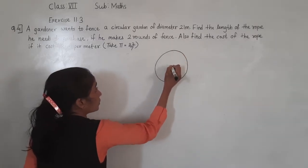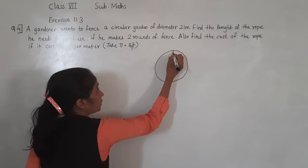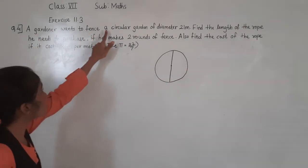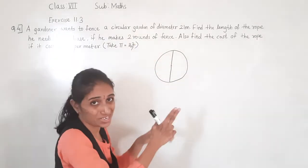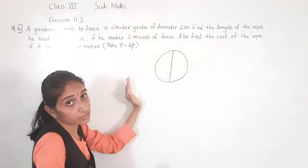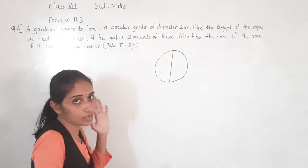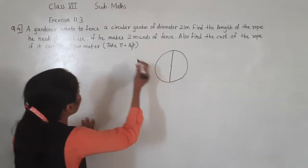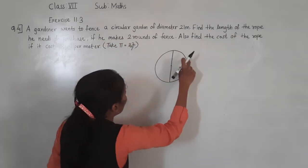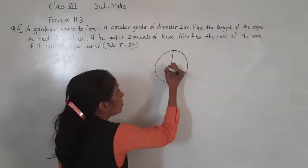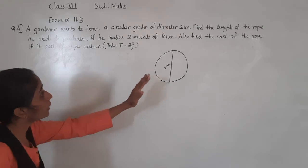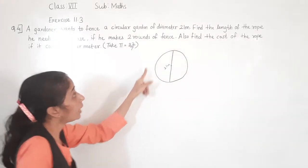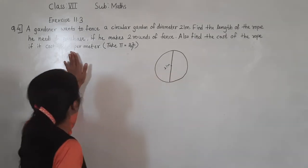The diameter passes through the center of the circle — this is the diameter. A gardener wants to fence a circular garden. Fencing means we need to find the perimeter of the circle, i.e., the circumference. Also find the cost of the rope if it costs rupees 4 per metre.